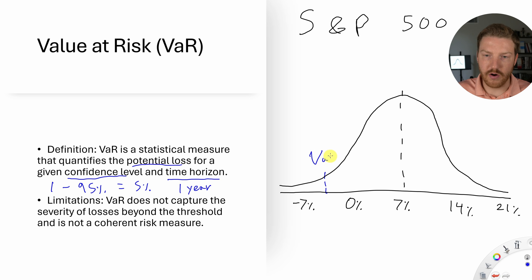So this would be our VaR, which might be, let's say, negative 3.5%. Now, what is the limitation of VaR? VaR does not capture the severity of losses beyond the threshold and is not a coherent risk measure. So let's talk about this. This is what I want to focus on: severity of losses beyond the threshold.